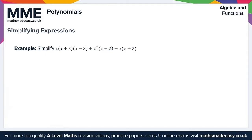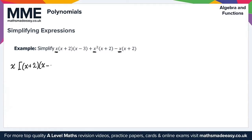So let's take a look at this example. All we want to do is simplify this expression. I can notice straight away that x is in each term of the expression. We've got an x and an x squared, so we can take out at least an x as a common factor. Taking x out gives us x times [(x plus 2)(x minus 3) plus x(x plus 2) minus (x plus 2)].